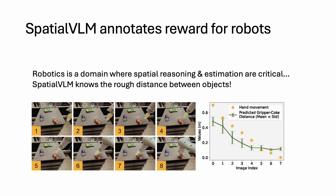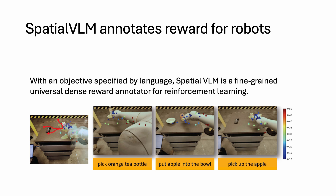Furthermore, Spatial VLM can provide quantitative information that is essential to robotics. For example, we can ask the model to annotate rewards for a robot arm to approach and pick up objects. With the knowledge of distances, Spatial VLM can annotate dense rewards that are more useful for efficient policy learning.